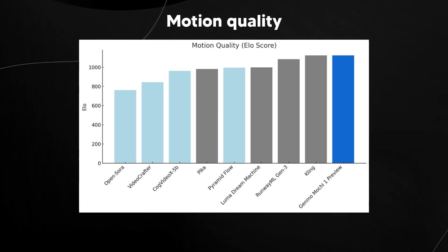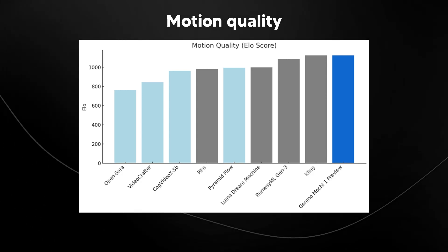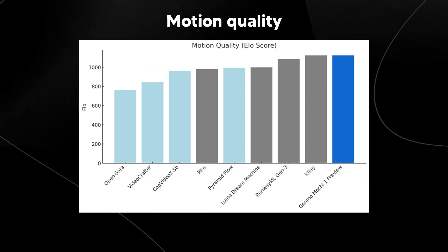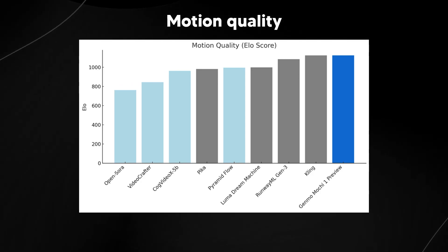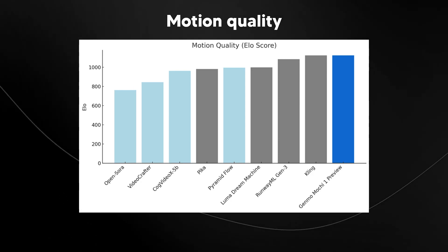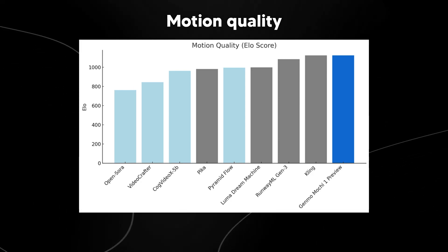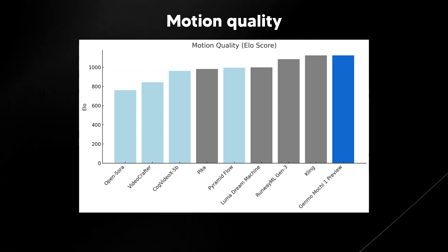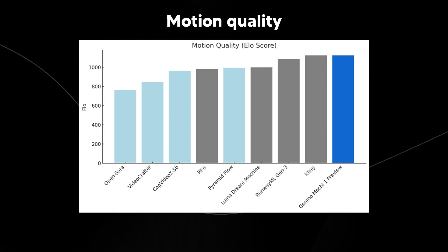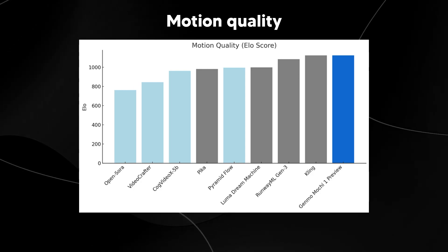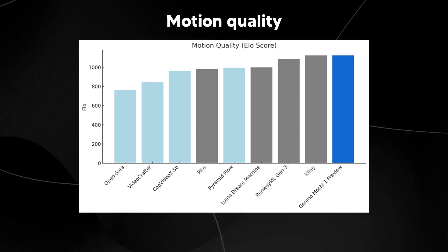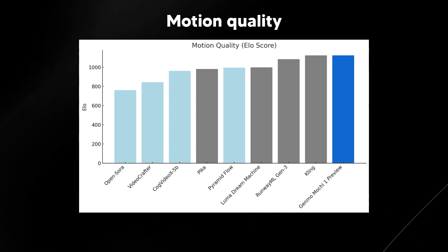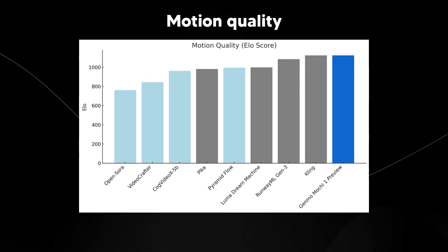Mochi 1 also delivers significant improvements in motion quality. The smoothness of character movements in generated videos has been challenging for most AI models, leading to unnatural or robotic-looking actions. Mochi 1 addresses these issues by creating fluid, lifelike motion that enhances overall realism, making content more engaging and visually pleasing. Looking at the motion quality ELO score, Genmo's Mochi 1 Preview surpasses even Runway Gen 3 and Luma Dream Machine, and even Kling — which is rather surprising — meaning the Genmo team have done something absolutely incredible.